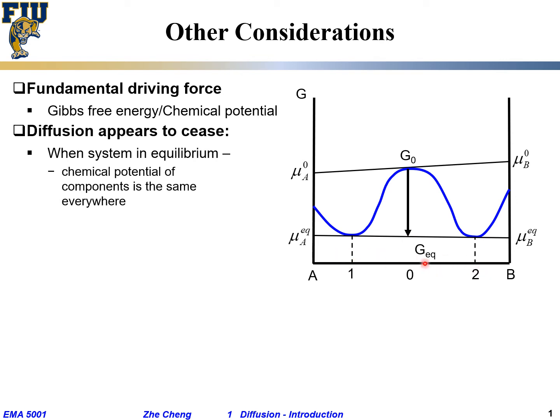In region one, the chemical potential for A is the same as the chemical potential for A in region two. Makes sense?